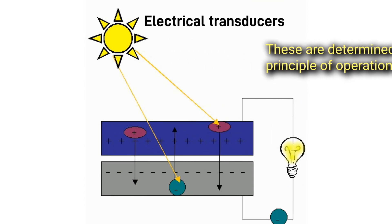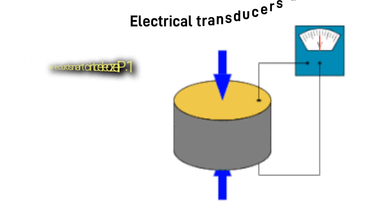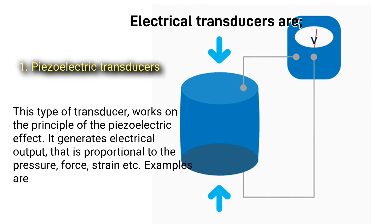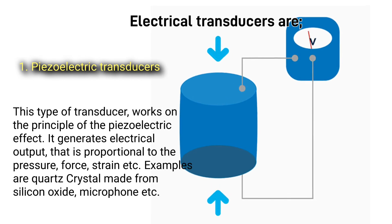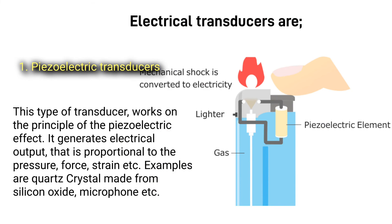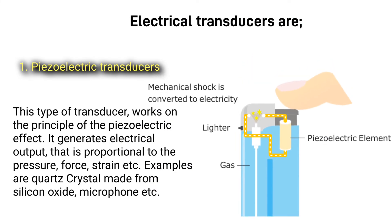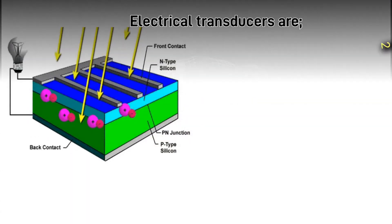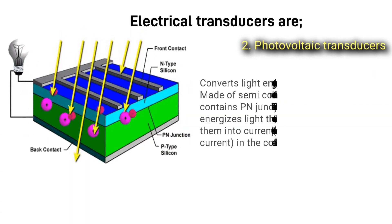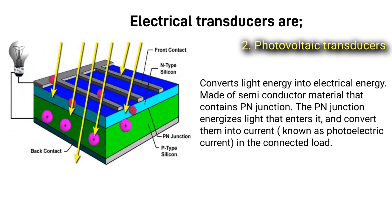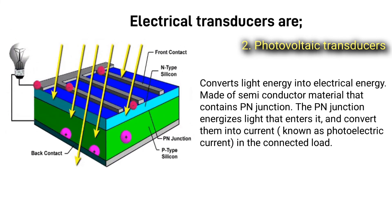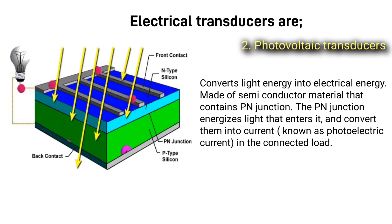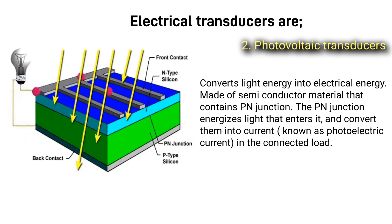Electrical transducers are determined based on their principle of operation. One, piezoelectric transducers — work on the principle of the piezoelectric effect, generating electrical output proportional to pressure, force, or strain; examples are quartz crystal made from silicon oxide and microphones. Two, photovoltaic transducers — convert light energy into electrical energy, made of semiconductor material containing a p-n junction, which energizes incoming light and converts it into current known as photoelectric current.